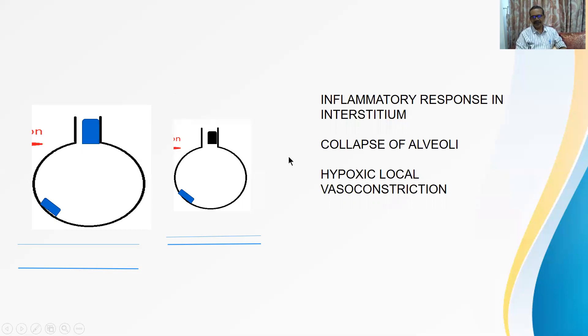Now this collapse of alveolus is a central feature of COVID because that only explains the ground glass opacity which is seen in periphery. This collapse of alveolus is also seen in post-mortem reports. This particular thing is very straightforward. What is not that straightforward is the last part, that is hypoxic local vasoconstriction.